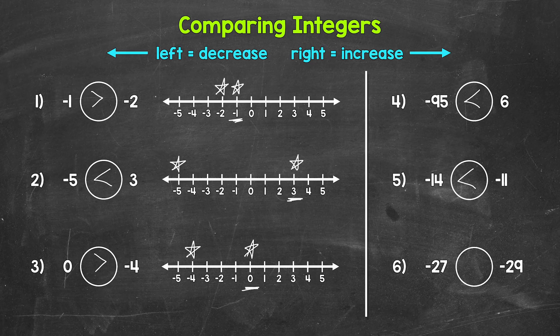Lastly, taking a look at number six, we have: negative 27 is greater than, less than, or equal to negative 29. So we have two negatives again. Which one is closer to zero? Which one is further to the right on a number line? That's going to be negative 27 — negative 27 is greater. So reading this from left to right, negative 27 is greater than negative 29.